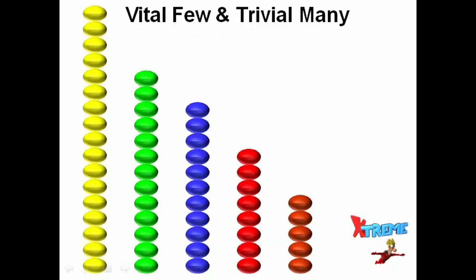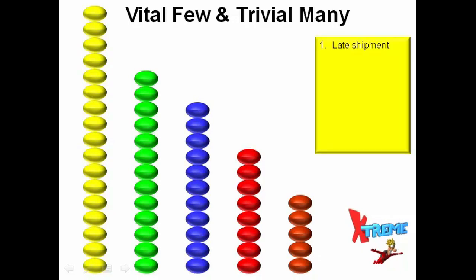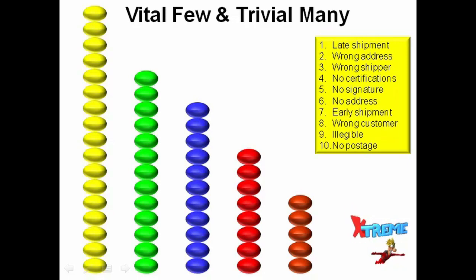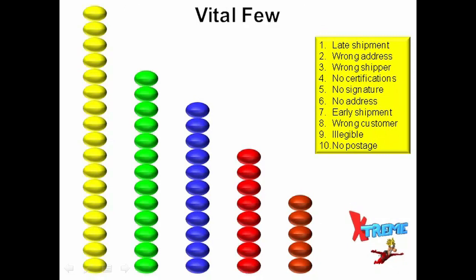Let's apply this new concept of the vital few and trivial many. This principle means that 80% of the problems you face come from 20% of the causes. For instance, if you discover there are 10 reasons or causes for the problems you are having, two of those causes are responsible for 80% of your problems. If you focus your efforts on eliminating those two causes or the vital few, 80% of your problems go away.